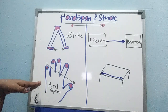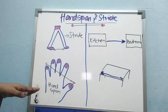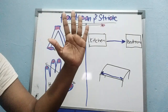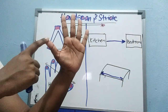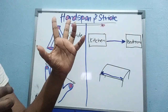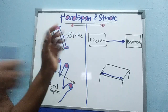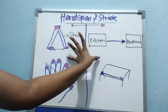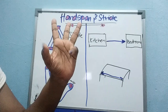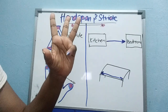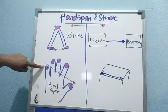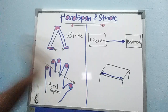Now look at hand span. What is hand span? Hand span is also very easy. This is your hand. Hand span is the measurement from your thumb until the last finger. Can you see here? This one and this one only — hand span. So from your last finger to your thumb.